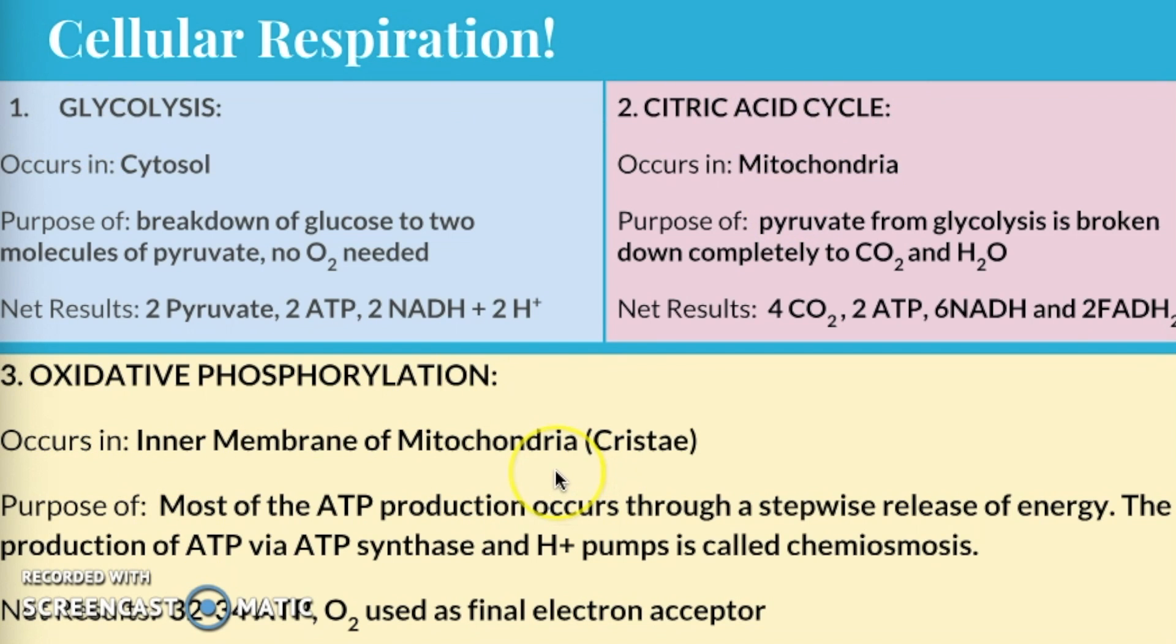Oxidative phosphorylation is the ending part, but this is where the large amount of ATP is formed as a result of the transfer of electrons from NADH or from FADH2 to oxygen by a series of electron carriers. Remember here, oxygen is used as the final electron acceptor. This is taking place in the mitochondria, across the inner membrane or across the cristae, and it's the major source of ATP in these organisms that perform aerobic cellular respiration.